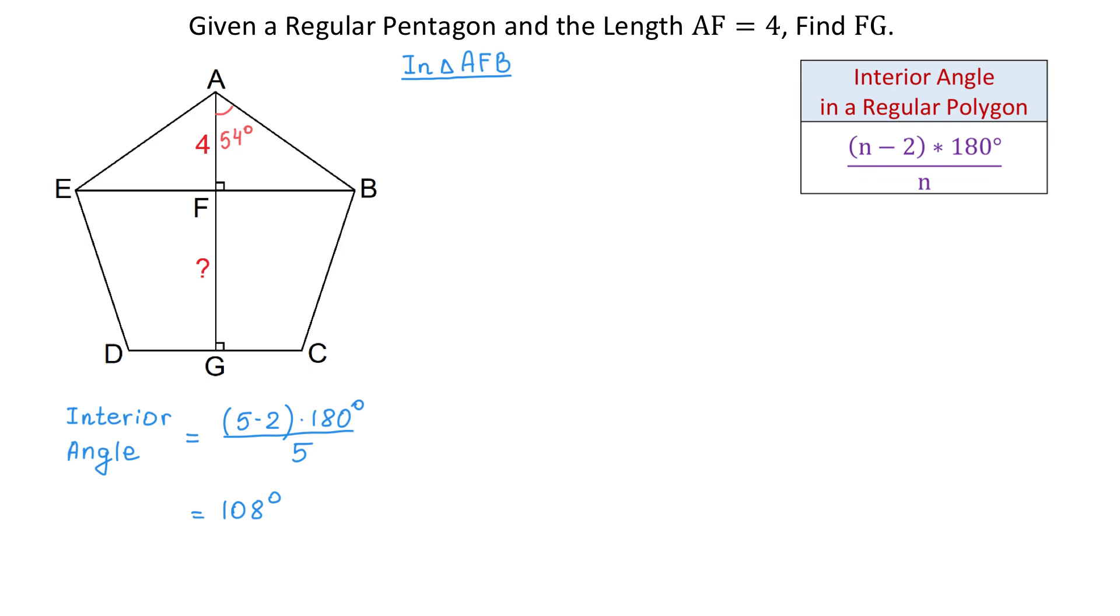So we will write that cosine of 54 degrees equals the adjacent side 4 divided by hypotenuse AB. To find AB, we will divide 4 by cosine of 54 degrees. Now, here for simplicity, we will use a calculator and we will round the answer and we will get that AB is approximately 6.805.